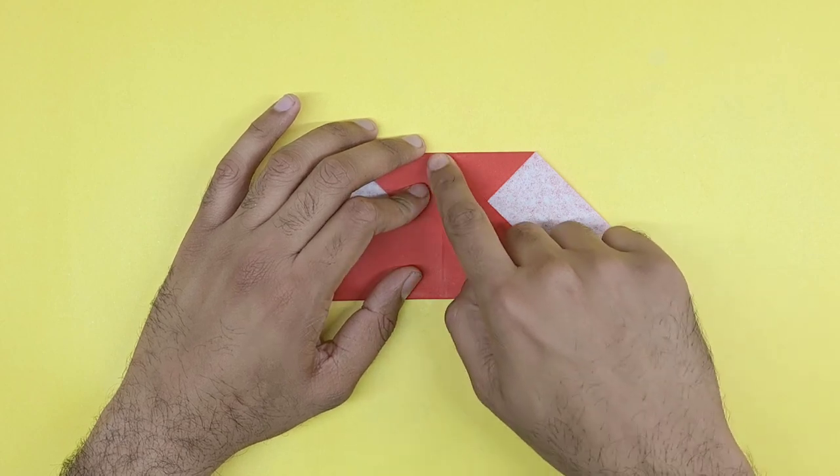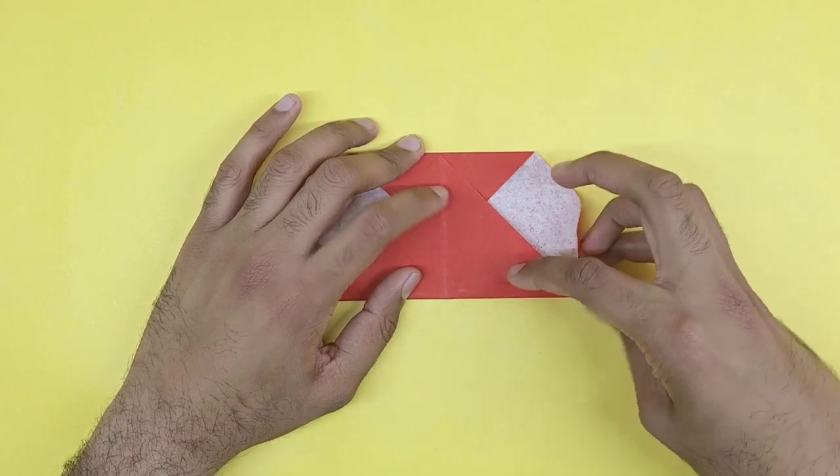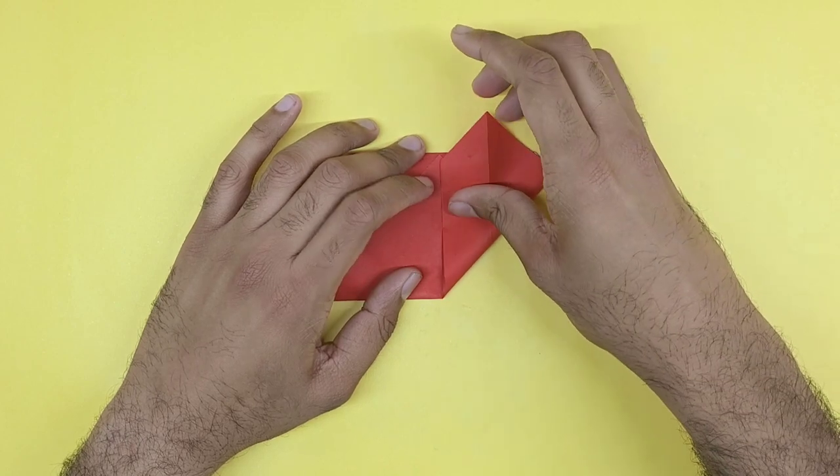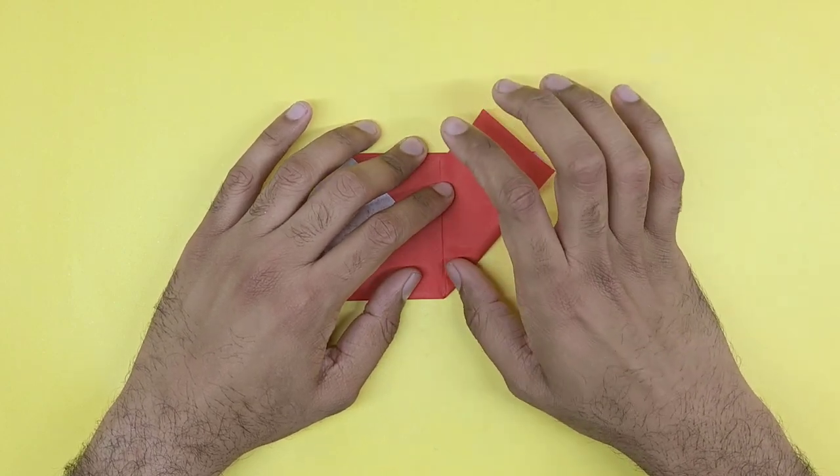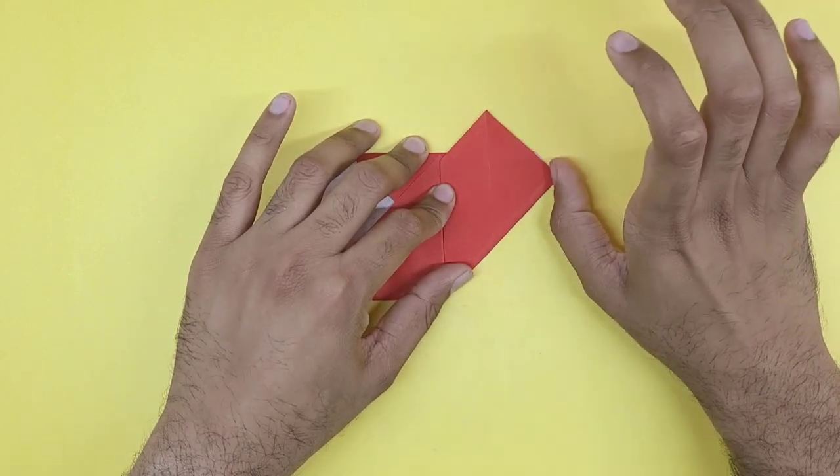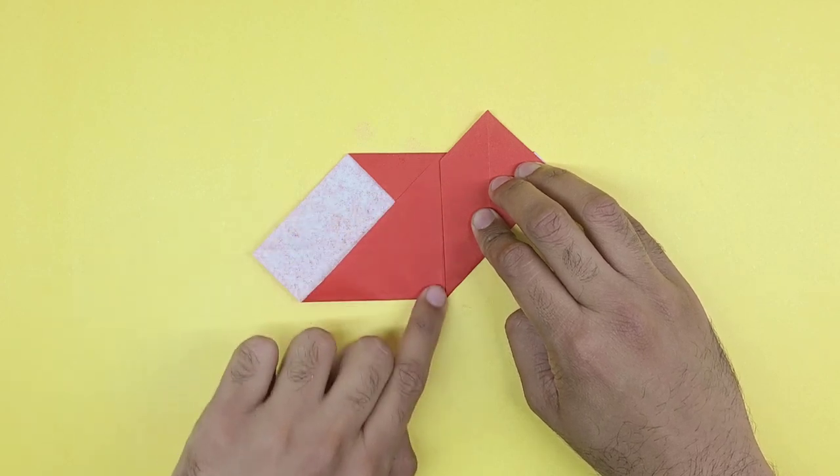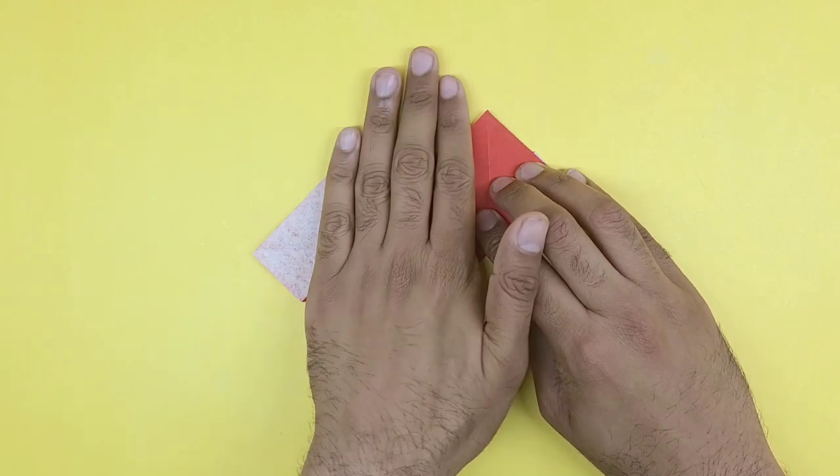Fold the right side to meet the crease in the center. Fold the left side to meet the crease in the center and you should get this.